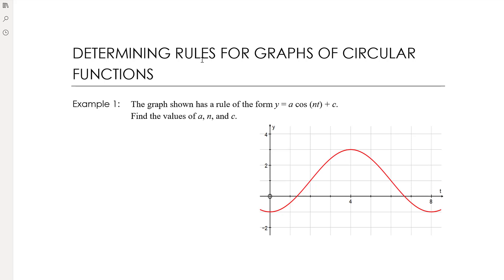Let's work through the examples. Here we've got a graph and we're told it has a rule of the form y equals a times cos of nt plus c. So: dilation from the x-axis, hence amplitude change potentially; dilation from the y-axis, hence period change potentially; there could be reflections depending on whether a or n are negative; and then it's been translated up by c.